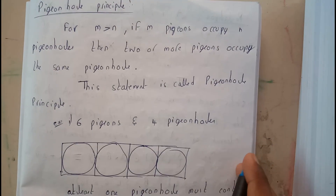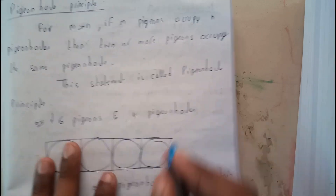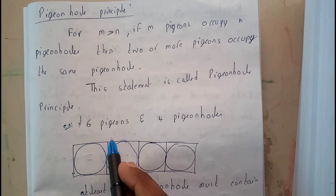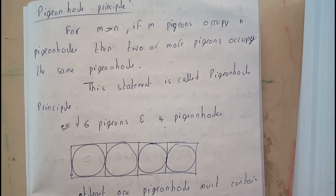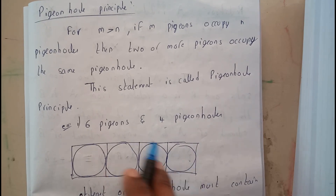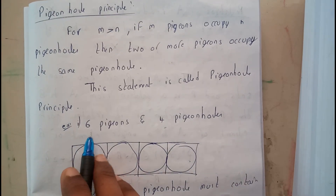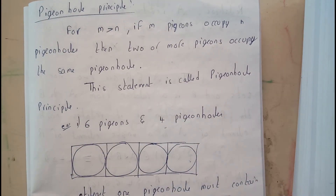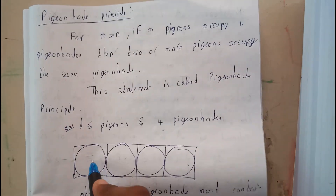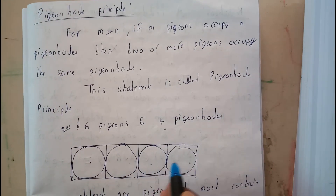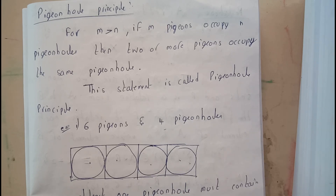Taking an example: there are six pigeons and four pigeon holes. These are the pigeon holes and we need to place these six pigeons. If you place one here, one here, one here, one here, we are left with two.